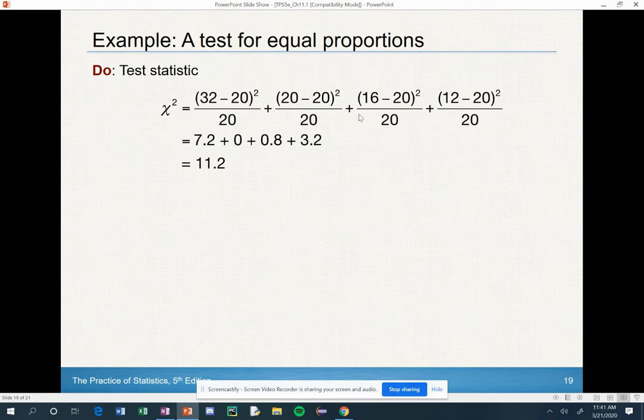And you're going to add up all those. When you add them all up, you get 11.2. I think it's much faster, easier, and more accurate if you use your calculator. So you have to enter these values into two lists. Make sure you hit stat edit.